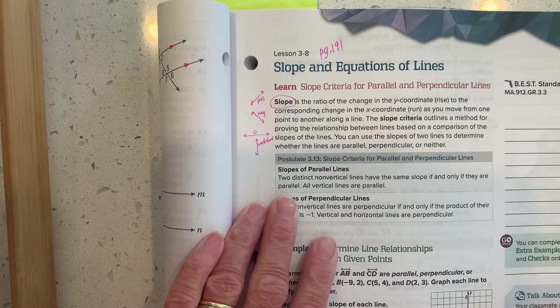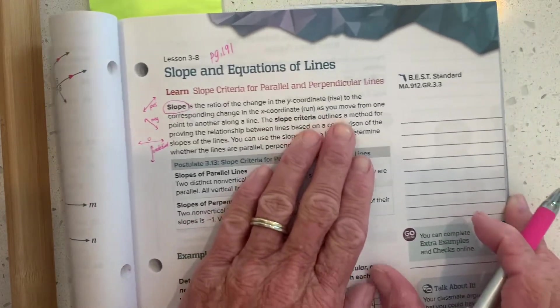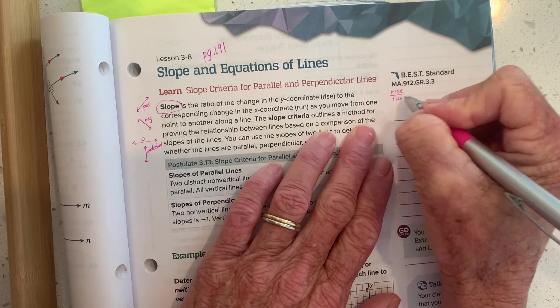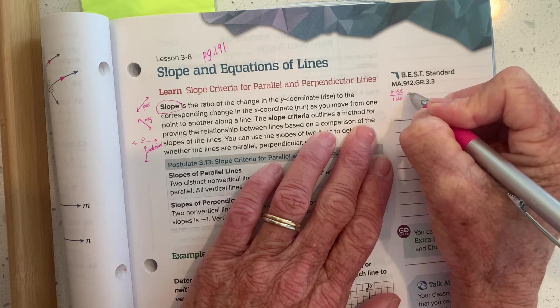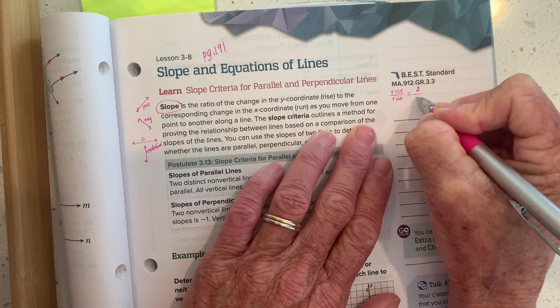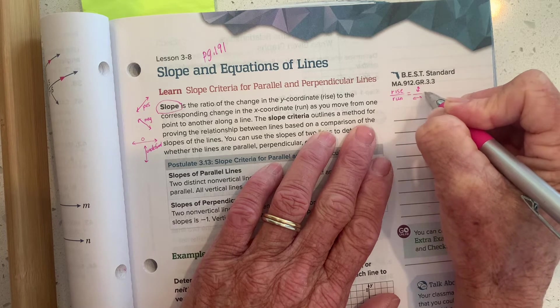That's a quick review from algebra. We think of slope as rise over run, and the rise is the vertical change, the up and down change. The run is our left and right change.